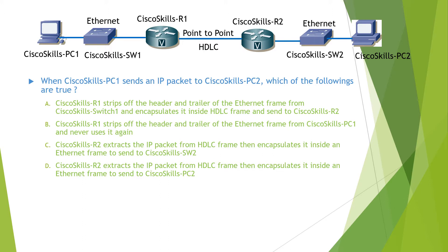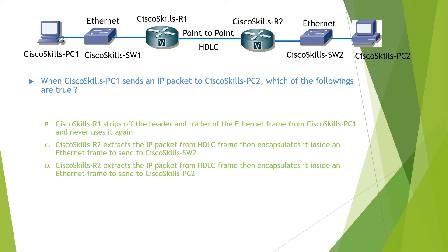Let's review the answers. R1 strips off the header and the trailer of the Ethernet frame from Switch 1 and encapsulates it inside an HDLC frame and sends it to R2. This answer is not correct because the Ethernet frame is not from Switch 1 — it is from PC1. R1 strips off the header and trailer of the Ethernet frame from PC1 and never uses it again. This answer is correct.